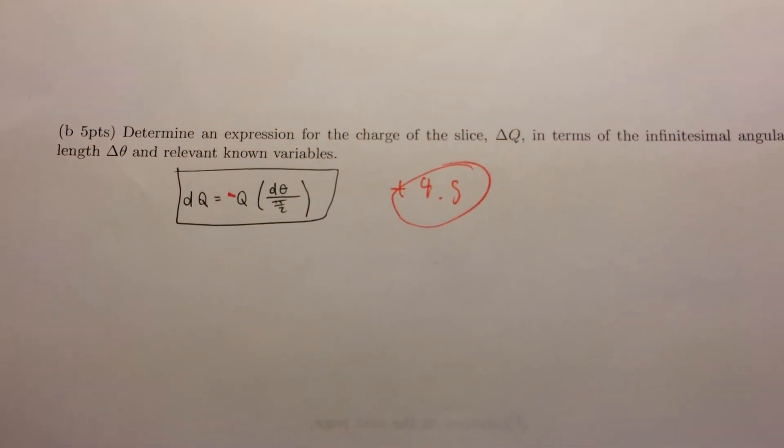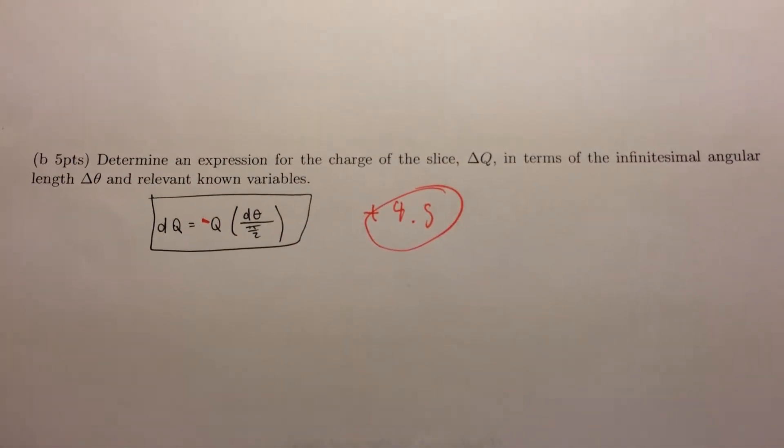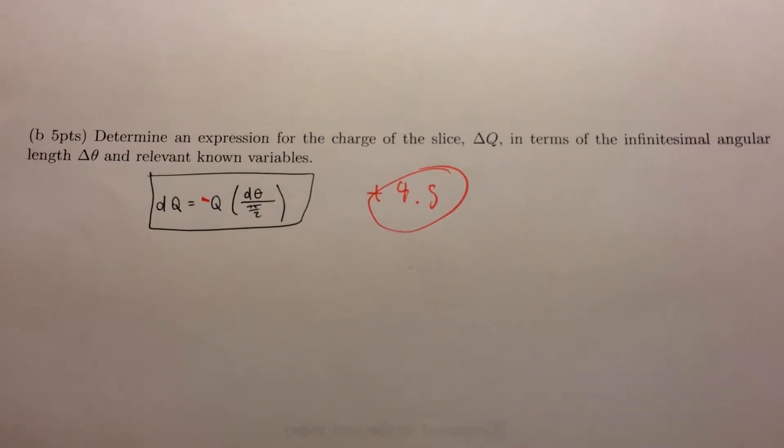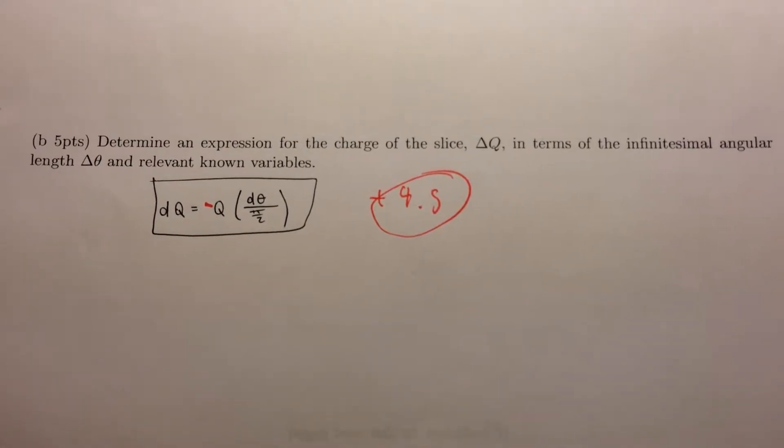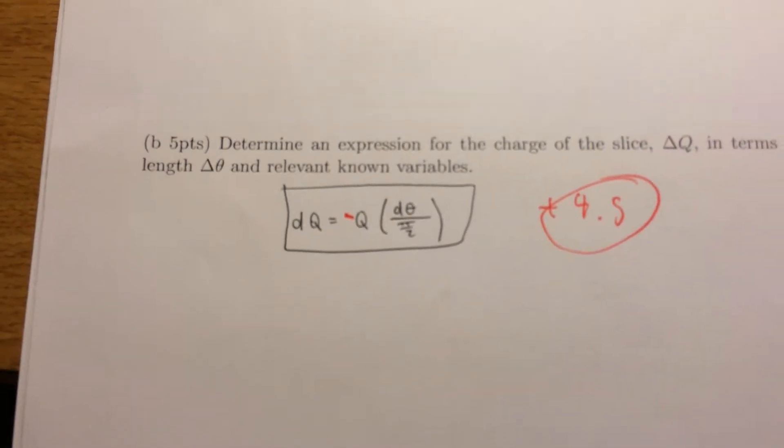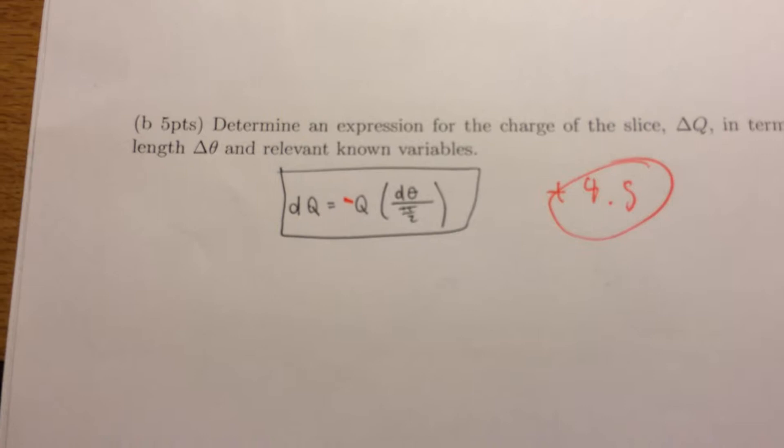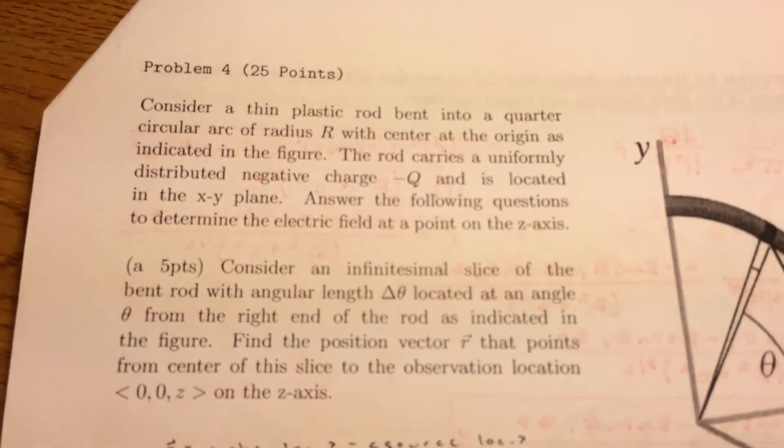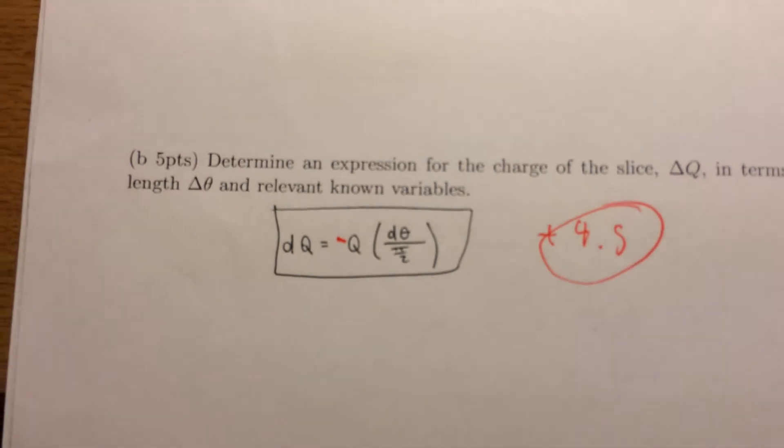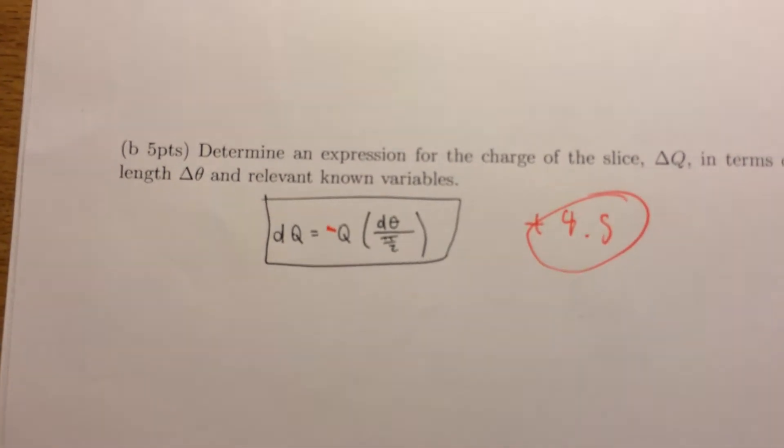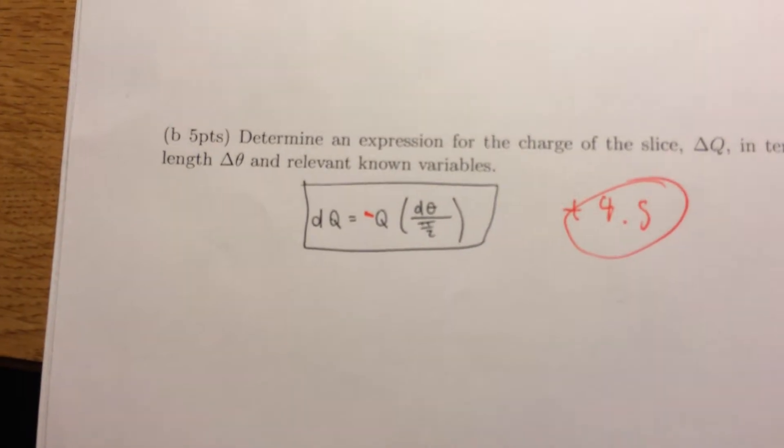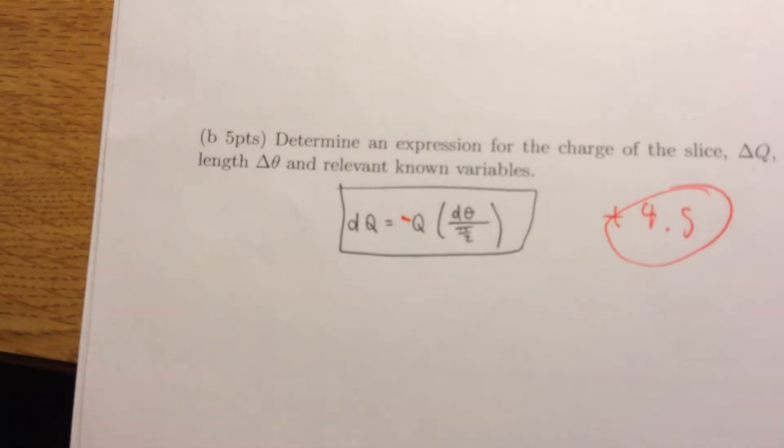We're going to determine an expression for the charge of the slice delta q in terms of the infinitesimal angular length delta theta and relevant known variables. So delta q equals the charge on the arc, which is actually negative q. Always remember to read very carefully. Which is negative q times delta theta over pi over 2. And pi over 2 is basically the length of the arc.